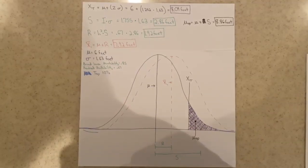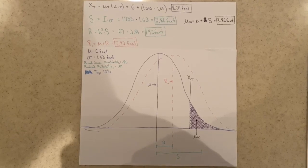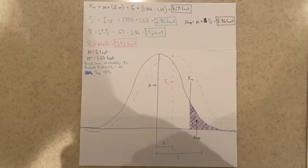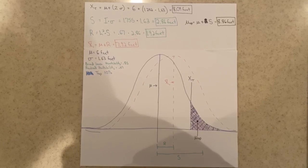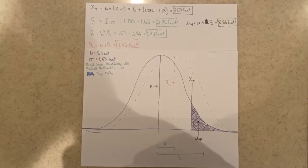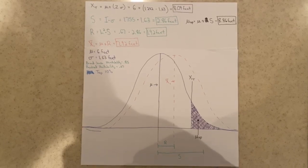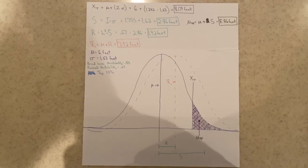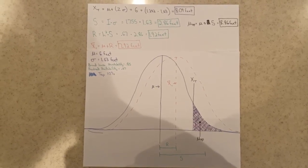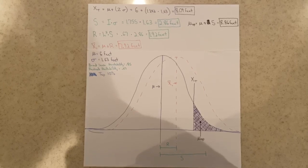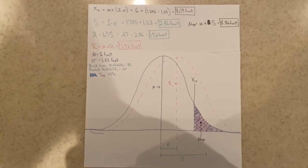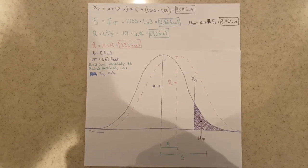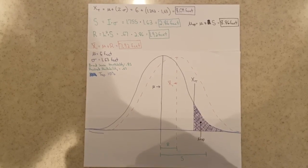We can take this selection differential and use it to find the extent to which the feather lengths change over a single generation. We take our given realized heritability value of 0.67 and multiply it with the selection differential value of 2.86 feet to get a value of 1.92 feet.